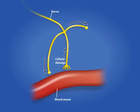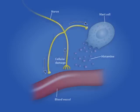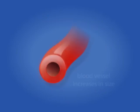Other chemical mediators, such as histamine, are released from damaged cells, which lead to an increase in vascular permeability and vasodilation.